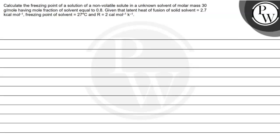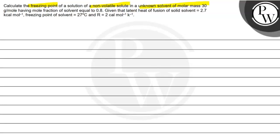Hello bachon, aaj ka hamara question hai: calculate the freezing point of the solution of a non-volatile solute in an unknown solvent of molar mass 30 gram per mole, having mole fraction of solvent equal to 0.8. Given that latent heat of fusion of solid solvent is 2.7 kilocalorie per mole, freezing point of solvent is 27 degrees Celsius, and R (gas constant) is equal to 2 calorie per mole per Kelvin. Toh is question ko karne se pehle humein 2-3 formulas pate hone chahiye.